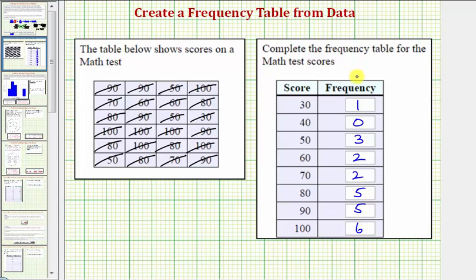To keep things organized it is important to cross out the data values as we tally them for the frequency table. I hope you found this helpful.